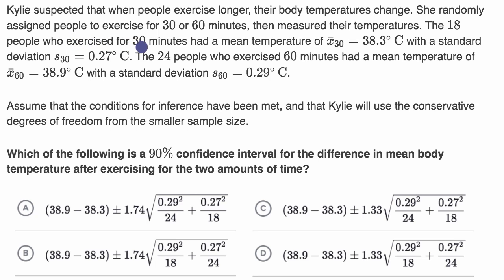The 18 people who exercised for 30 minutes had a mean temperature, so this is the sample mean for that sample of 18 folks, of 38.3 degrees Celsius with a standard deviation, this is a sample standard deviation for those 18 folks, of 0.27 degrees Celsius.